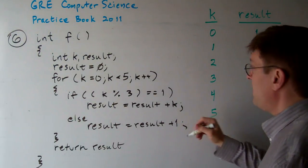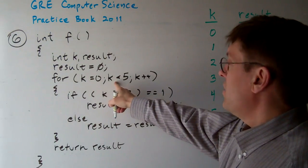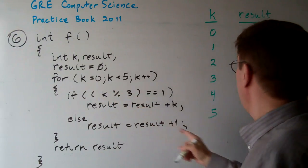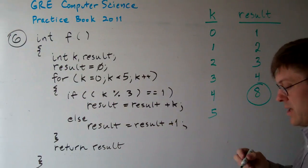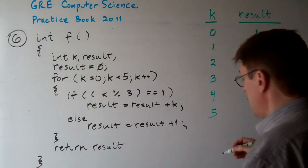And then k gets to be 5. This only loops until it's less than 5. So the result ends up being 8. So that's the answer D.